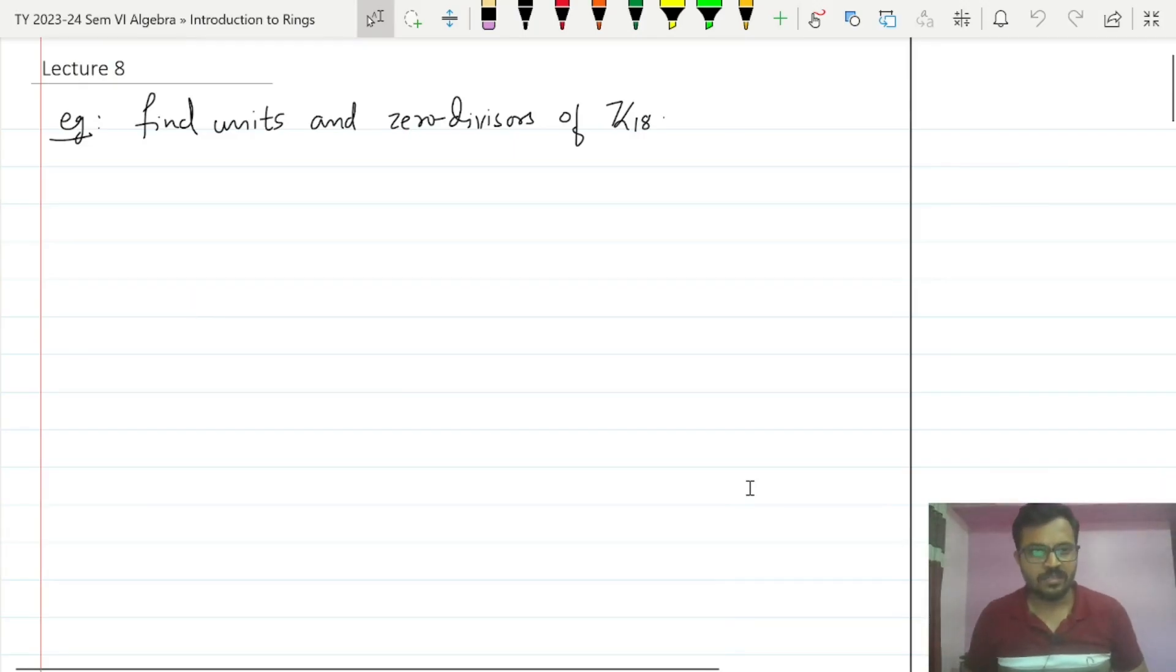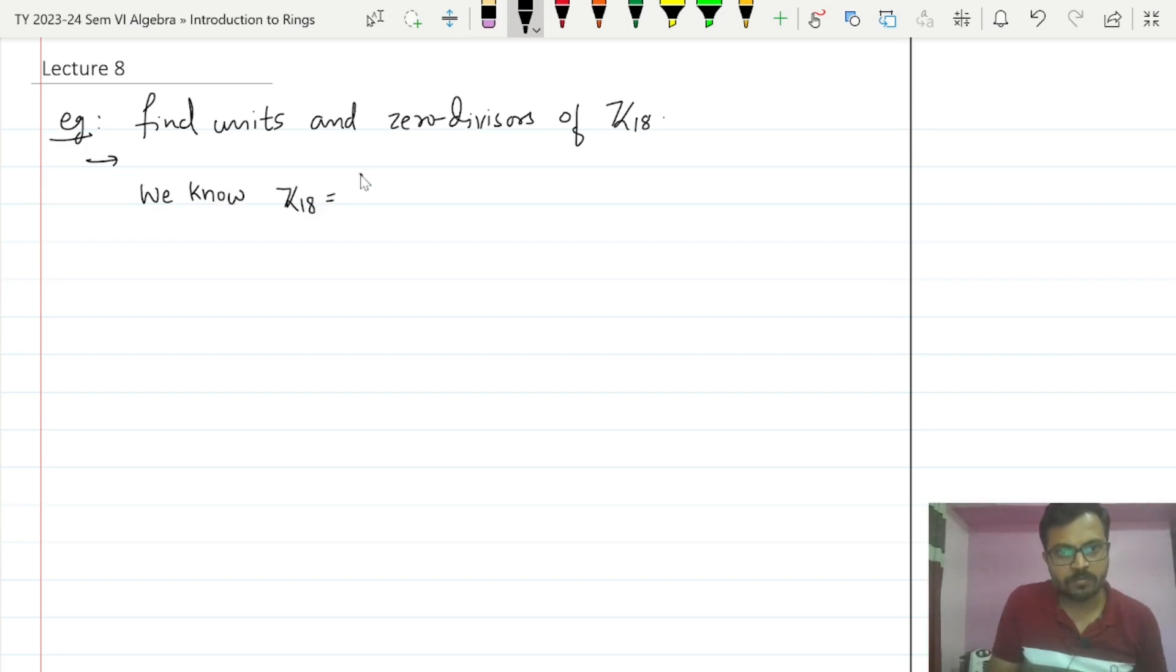Now let us find units and zero divisors in Z18. As we know what exactly Z18 is, the elements of Z18 will start from 0 bar and it will go up to 17 bar. The elements of Zn are nothing but 0 bar to n-1 bar.